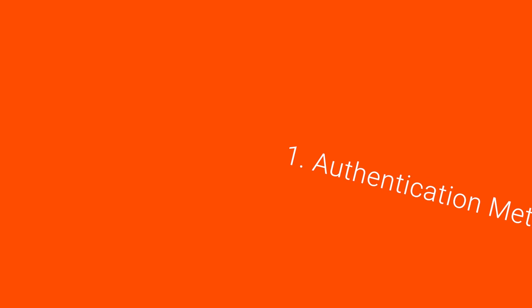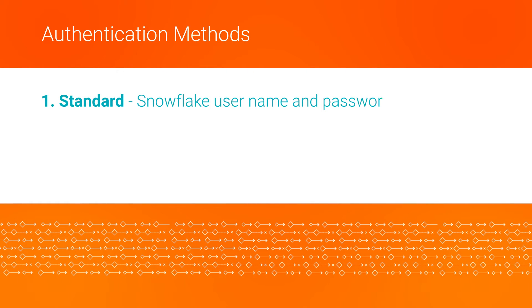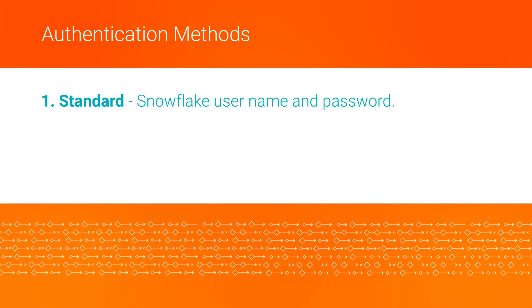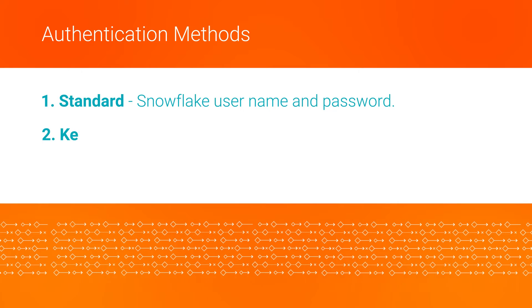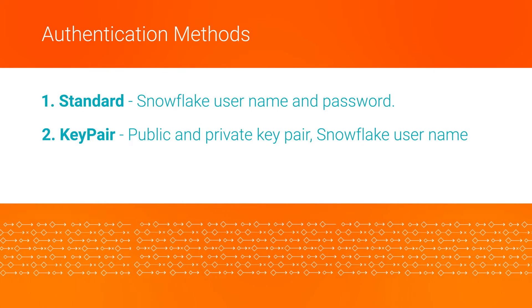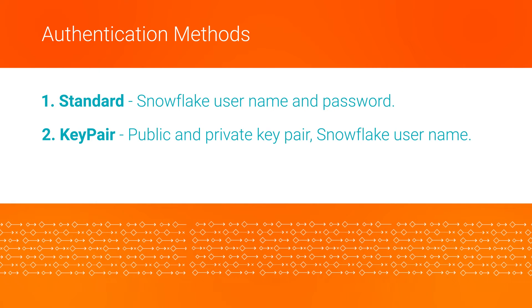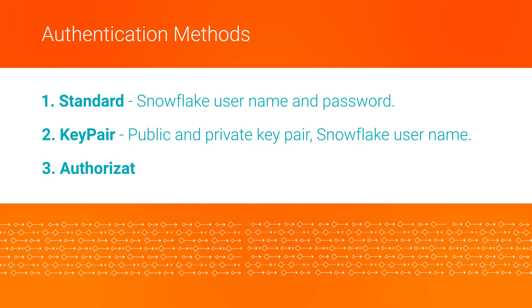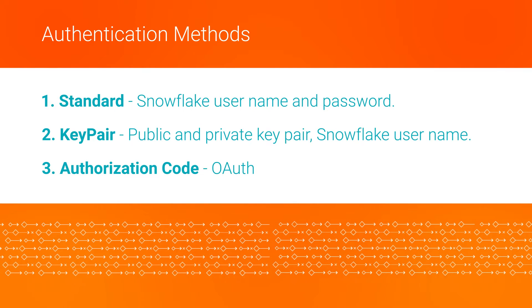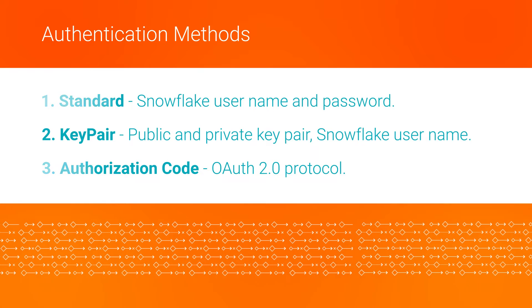There are three authentication methods you can use to connect to Snowflake. With standard authentication, you only need the username and password for your Snowflake account. With key pair authentication, you need a public and private key pair and a Snowflake account username. With authorization code, you'll use the OAuth 2.0 protocol.